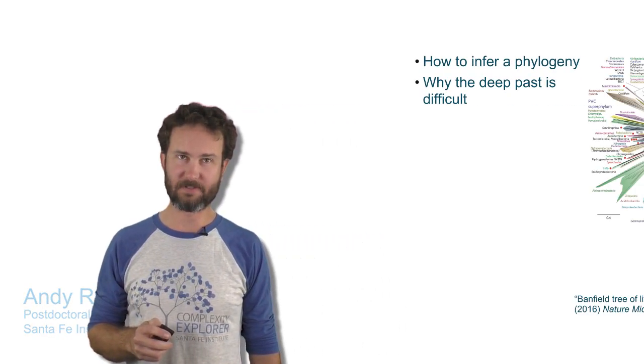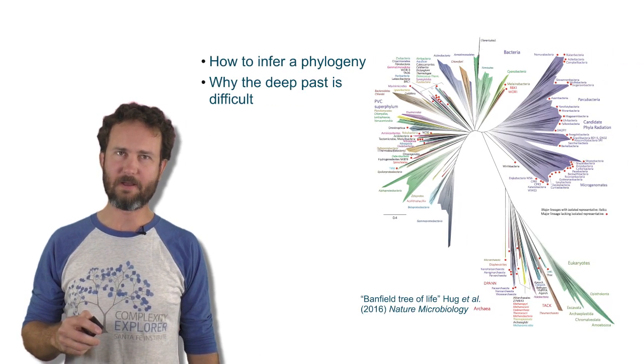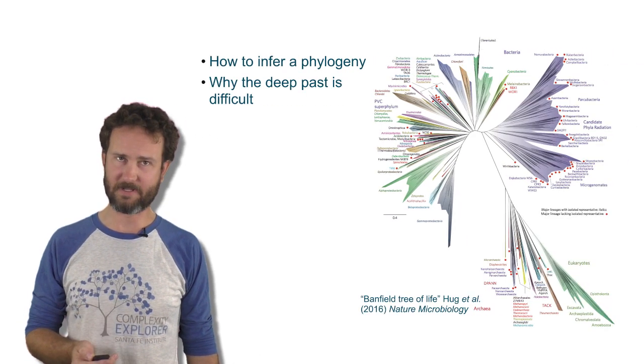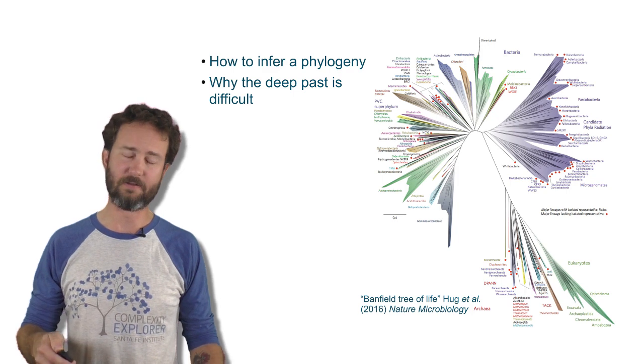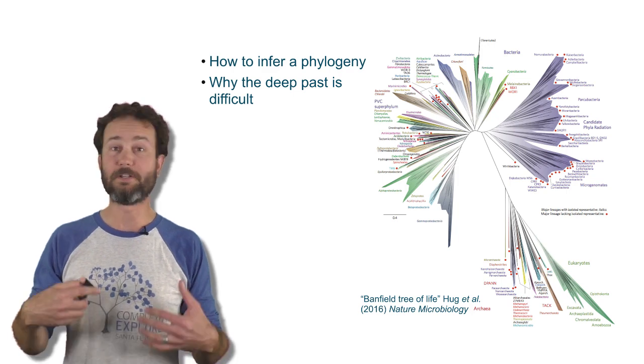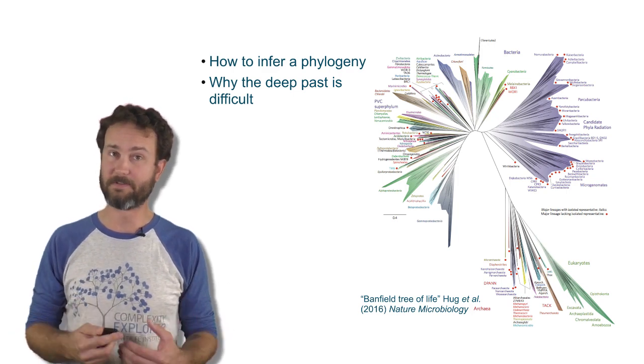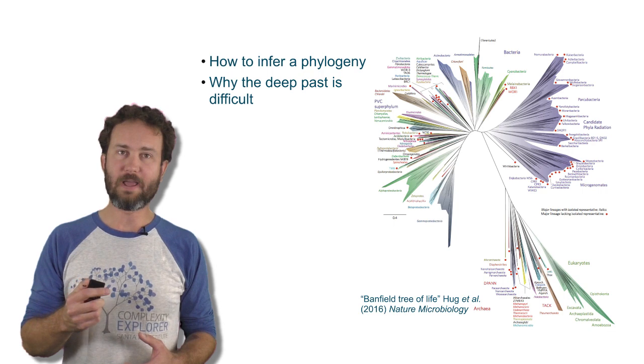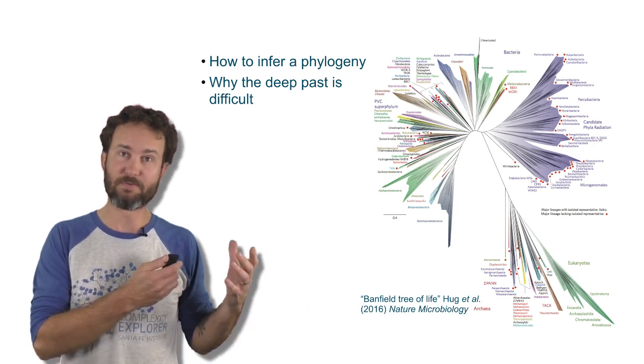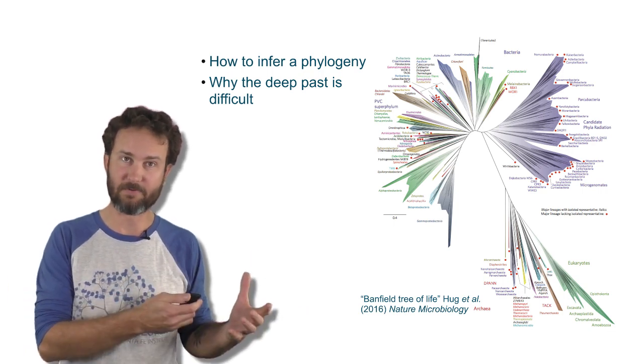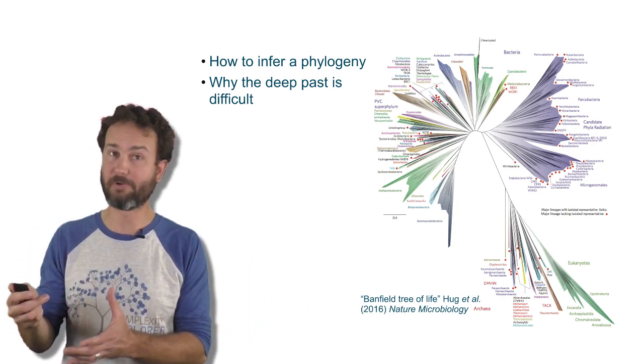Hello, I'm Andy Roeminger. I'm a postdoctoral fellow at the Santa Fe Institute, and today we're going to be taking a deeper dive into phylogenetics. Specifically, we're going to be talking about how to statistically infer a phylogeny from data on organisms living in the present, and why the deep past is so difficult to infer from this contemporary data.